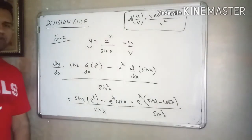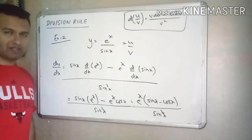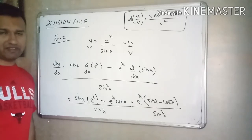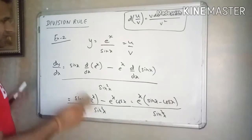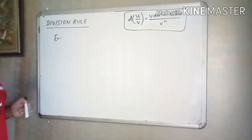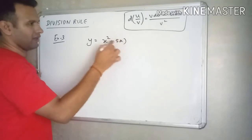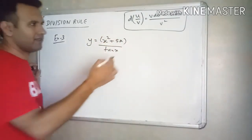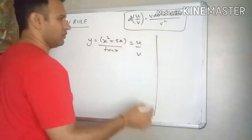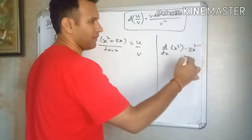Let us take another example. Please pause the video and try it yourself — that's very important. Today we have discussed up to the division rule. In the next lecture we will discuss the chain rule, which is really important, and then we will discuss some applications — so there are still about three more lectures to go for derivatives. The third example: y is equal to x square plus 5x divided by tan x. Here u is x square plus 5x and v is tan x. Derivative of x square is 2x, and derivative of 5x is 5, so derivative of x square plus 5x is 2x plus 5.